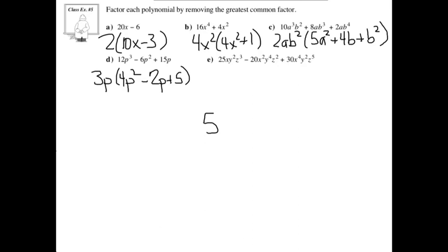Looking at the x's, we have x, x squared, and x to the power of 4 — there's at least an x in each one. Looking at the y's, you've got y squared, y to the power of 4, and y squared — there's at least a y squared. And last but not least, we've got the z's: z to the power of 3, z to the power of 2, and z to the power of 5 — there's at least a z squared in each one of these.